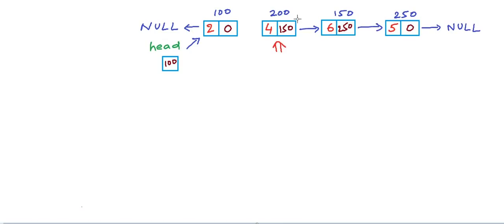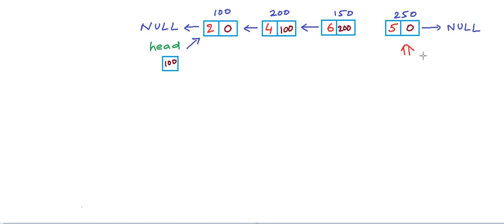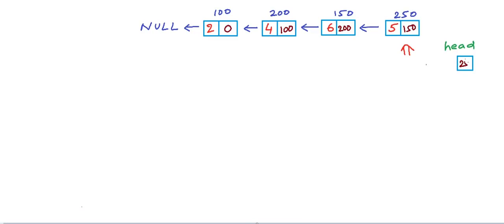Let's say we are able to traverse the list and go to each of the nodes, storing all the relevant information in some temporary variables. At the second node, we will reverse the link so the address part will be set as 100. Then we go to the node at address 150 and set its address as 200, breaking the old link and building the new one. Then at address 250, we set the address to 150. Finally, when we have reached the last node, we adjust the head variable to 250, so the head pointer will point to the node at address 250, and our linked list is reversed.